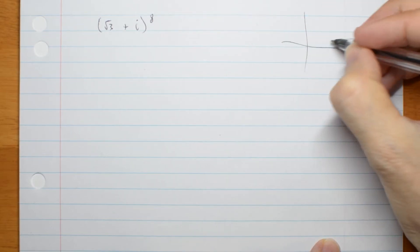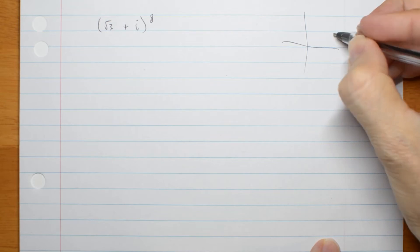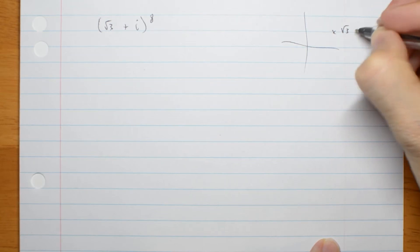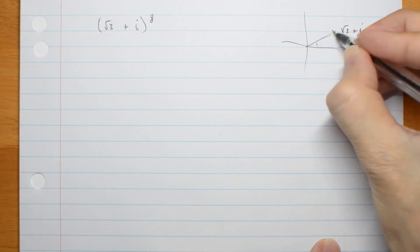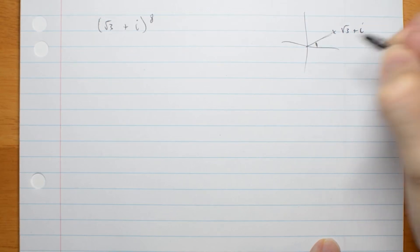So first of all, let's do a quick sketch. Root 3 plus i. So I'm interested in that length and that angle, that argument.